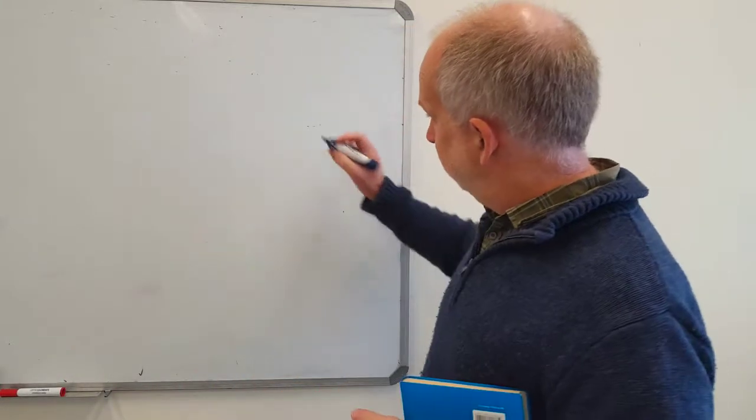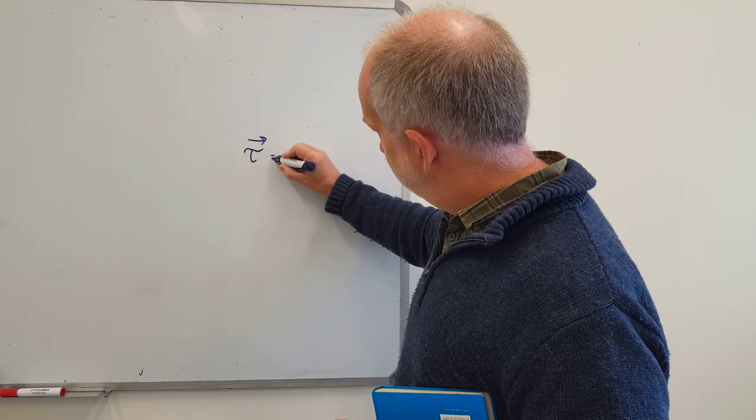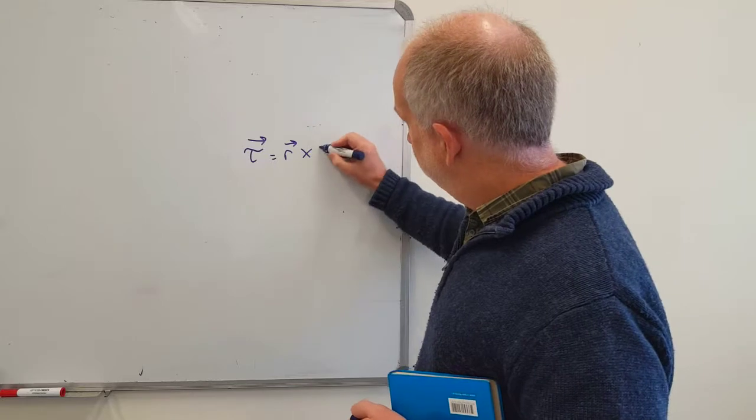Now the equation is the torque, written using the Greek letter tau typically, vector, is equal to R, a displacement vector, cross product the force.